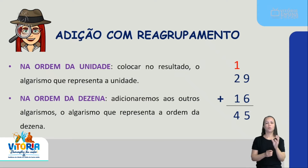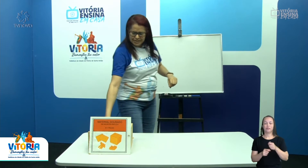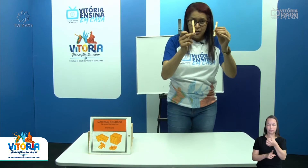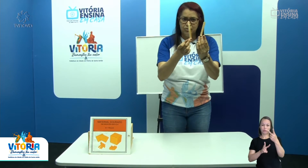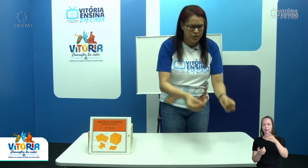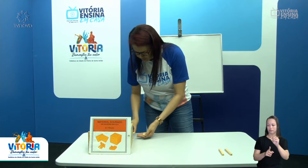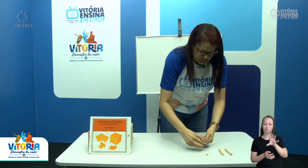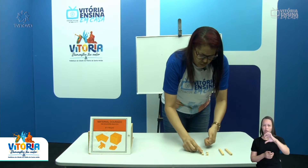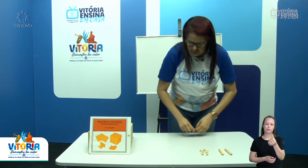Deu para entender? Vamos fazer ali na mesa para compreender um pouco mais. 29 mais 16. Duas dezenas, cada uma valendo 10 — a barrinha representa 10 unidades, 10 mais 10, 20. Então vou pegar aqui 9 cubos: 1, 2, 3, 4, 5, 6, 7, 8, 9.